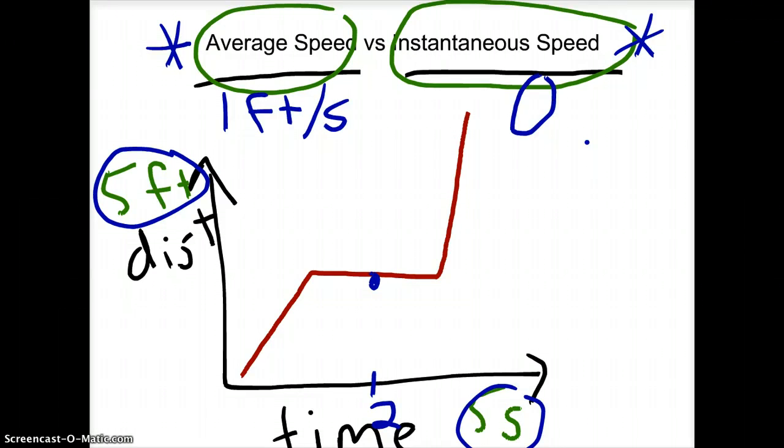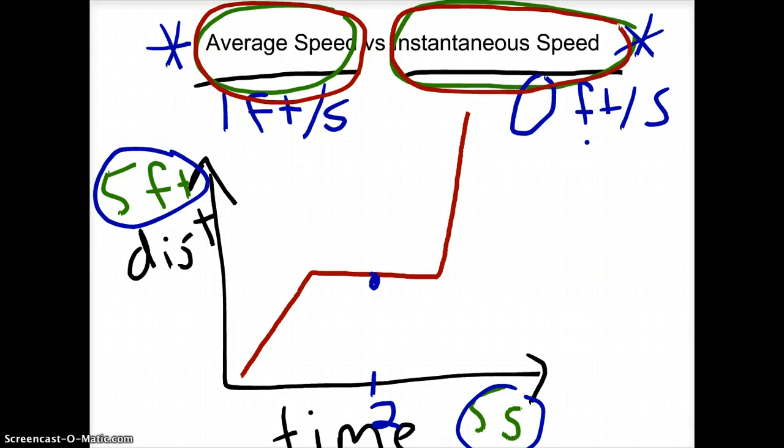So in this case, the instantaneous speed would be 0 feet per second. Of course, it would depend on where in the graph I made that point. So again, average speed is total distance over total time. Instantaneous speed is just a specific speed at a specific instant.